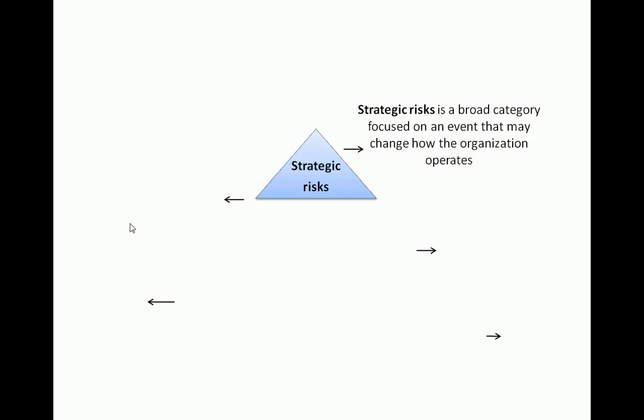There are different types of risks we have to be concerned with. The first is strategic risk — a very broad category. When we talk about strategic risk, we're talking about something major that could happen affecting our company: mergers and acquisitions in the industry that change the industry as a whole, things that change the way customers behave, changes in technology that might affect how our company operates. Strategic risks involve thinking big about the entire industry and how it affects the entire organization.